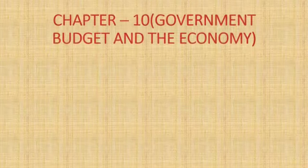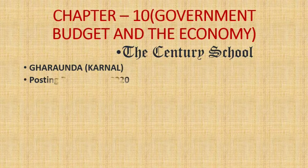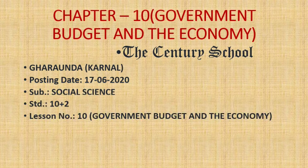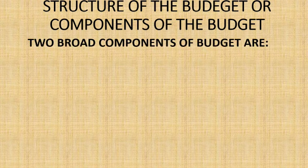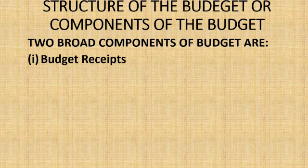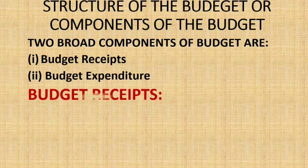Good morning students. Today we will start our next topic of this chapter, that is structure of the budget or components of the budget. This is our lecture number 29. So let's start. Now we will discuss structure of the budget or components of the budget. Two broad components of budgets are budget receipts and budget expenditure. Now first of all we will discuss budget receipts.